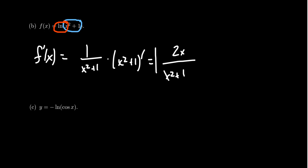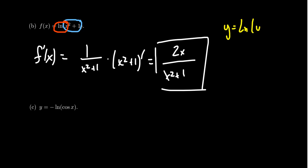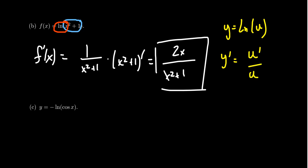A general pattern emerges from these examples. If your function looks like y equals the natural log of some u, where u is itself a function of x, then the derivative is 1 over u times u prime — the outer derivative times the inner derivative. This simplifies to u prime over u. So the derivative of the natural log of u is u prime over u: the original function on the bottom and its derivative in the numerator.